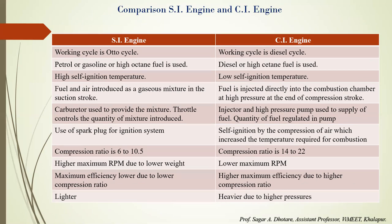In IC engines, there are two types of combustion: spark ignition (SI) and compression ignition (CI). The SI engine works on the Otto cycle; the CI engine works on the diesel cycle. SI engines use petroleum or gasoline (high octane fuel); CI engines use diesel or high cetane fuel. A high self-ignition temperature is necessary for SI engines. In CI engines, compression creates high temperature — as pressure increases and volume decreases, temperature rises — so a low self-ignition temperature is acceptable.